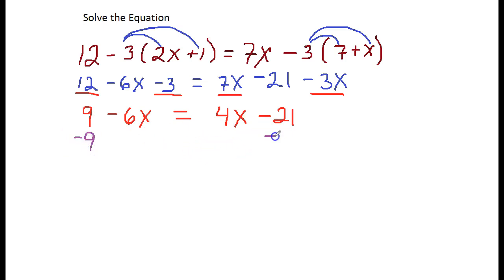Put it under like terms. I'm going to move my 4x to the left, so that means I'm going to subtract a 4x from each side. Then we're going to go straight down. This cancels. Negative 6x minus 4x is negative 10x. Bring down the equal sign. This cancels. Negative 21 minus 9 is negative 30.